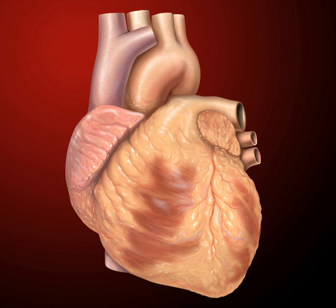The heart is the first functional organ to develop and starts to beat and pump blood at about three weeks into embryogenesis. This early start is crucial for subsequent embryonic and prenatal development. The heart derives from splanchnopleuric mesenchyme in the neural plate, which forms the cardiogenic region. Two endocardial tubes form here that fuse to form a primitive heart tube known as the tubular heart. Between the third and fourth week, the heart tube lengthens and begins to fold to form an S shape within the pericardium, placing the chambers and major vessels into the correct alignment.